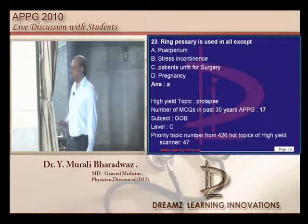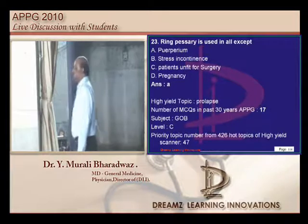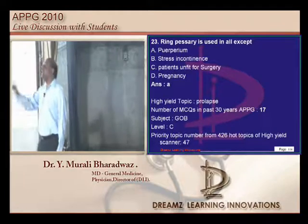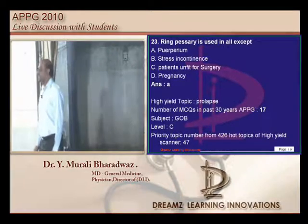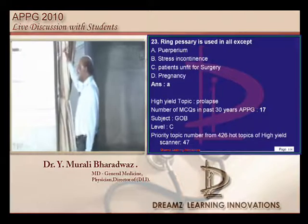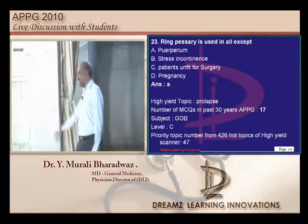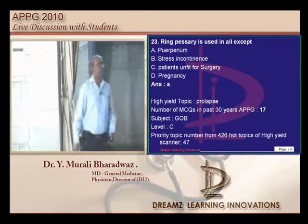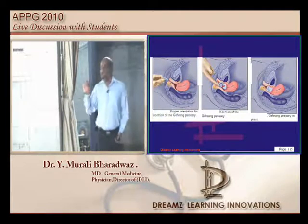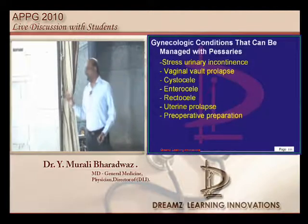Ring pessary is used in all except — this is a question where you might use guesswork but there is scope to miss. The most common wrong answer is stress incontinence. Ring pessary is actually used in: stress incontinence, vaginal vault prolapse, cystocele, enterocele, rectocele, uterine prolapse, and preoperative preparation.